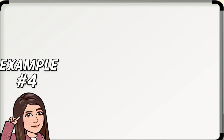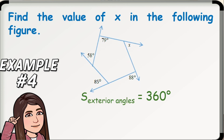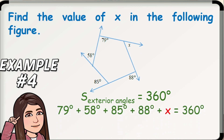And lastly, example number 4: Find the value of X in the following figure. We know that the sum of the measures of the exterior angles of a convex polygon is 360 degrees. Substituting the given values: 79 degrees plus 58 degrees plus 85 degrees plus 88 degrees plus X equals 360 degrees. Combining like terms: 310 plus X equals 360 degrees. Subtracting 310 from both sides, we have X equals 50 degrees.